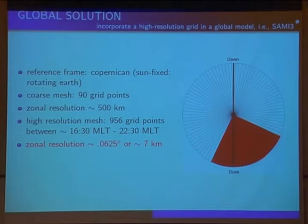And to solve that, what Glenn and I did is we took the SAMe 3 model and we basically put a high-resolution mesh in it, shown here. The sun is on the left. We have dawn and dusk. We went into a co-rotating frame. So this is always in the post-sunset region. And for the nominal grid, we took 90 grid points. So the resolution here is roughly 500 kilometers in the equatorial plane. In this region where it's red, we put 956 grid points, 0.0625 degrees or 7 kilometers. So we're going from 500 kilometers to 7 kilometers resolution here.